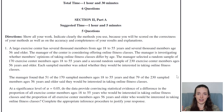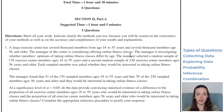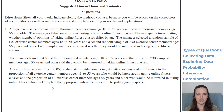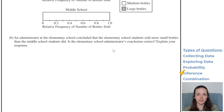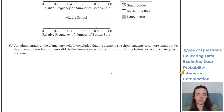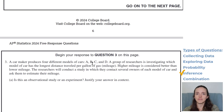We know the five types of questions that are going to be on here. It can be helpful to just preview all the questions to identify which one is which — you don't really have to read every word of the question to figure out what kind of question it is. For number one, if I skip down to the end: 'Do the data provide convincing statistical evidence of a difference?' Okay, this is the inference question — check. Number two: 'Complete the segmented bar graphs... is the elementary school administrator's conclusion correct?' Okay, this is exploring data — check.